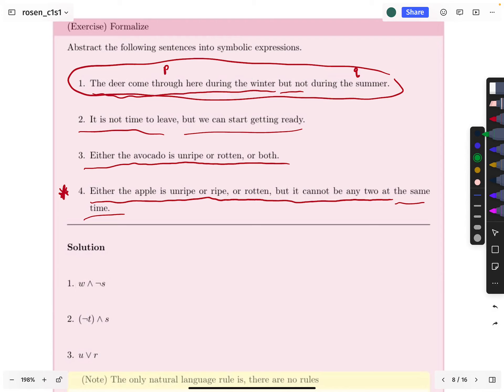By the way, a lot of times when you do these kinds of problems where you take a natural language sentence and turn it into these abstract symbols, you're meant to give a key. So you could give a key like W is the sentence, the deer come through here during the winter. And likewise for the symbol S and its corresponding proposition, which, by the way, it may be worth remarking, the proposition for S would be the deer come through here during the summer.